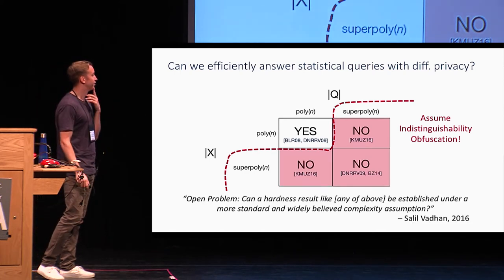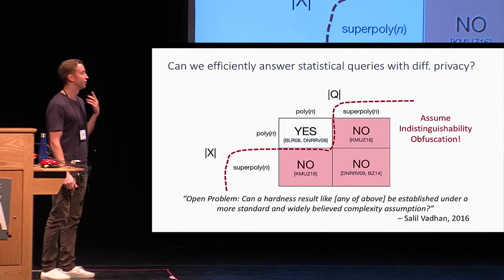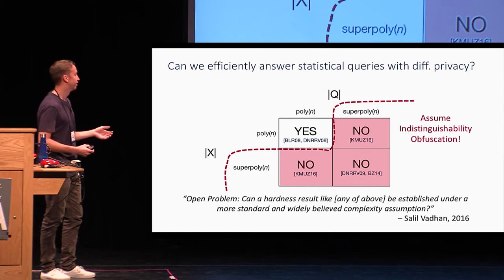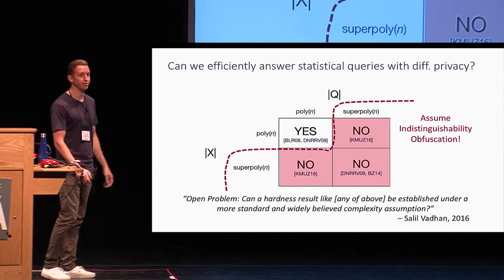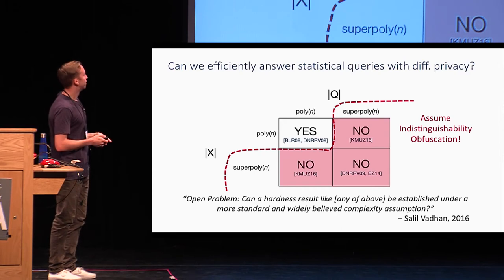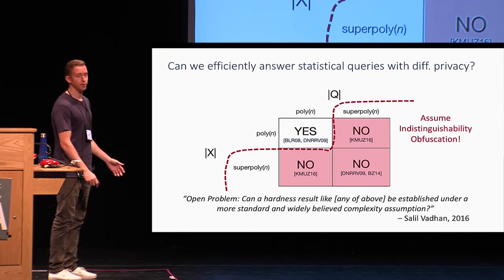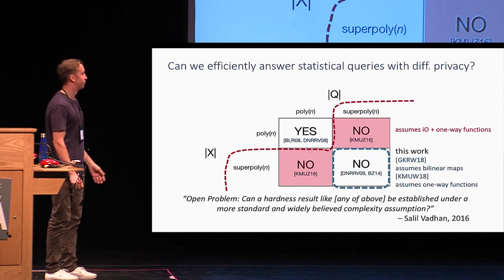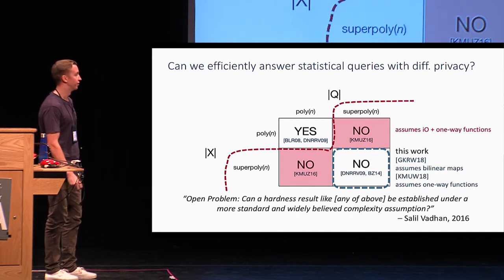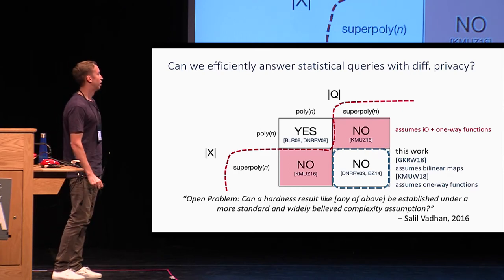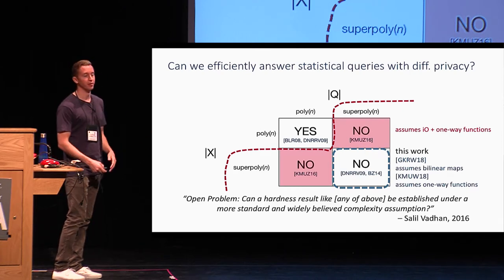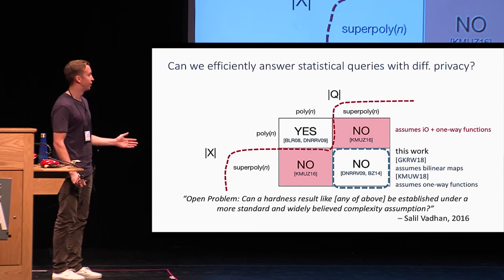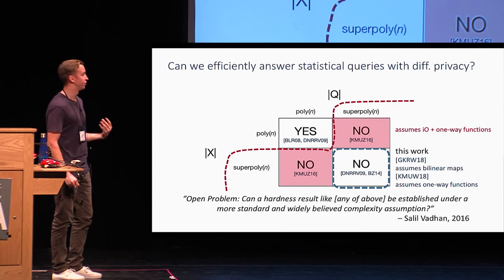This prompted Salil Vadhan in 2016 in his survey on differential privacy to pose as an open problem whether any of these hardness results can be replicated under a more standard and widely believed complexity assumption. You can view the work of Rishabh et al. and our paper as a partial answer of yes to this question, where we replicate the lower bound of Boneh-Zhandry's traitor tracing scheme — replacing indistinguishability obfuscation with bilinear maps in the Rishabh et al. paper, and just one-way functions in our paper.